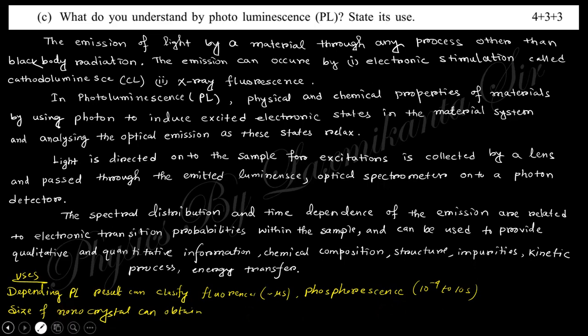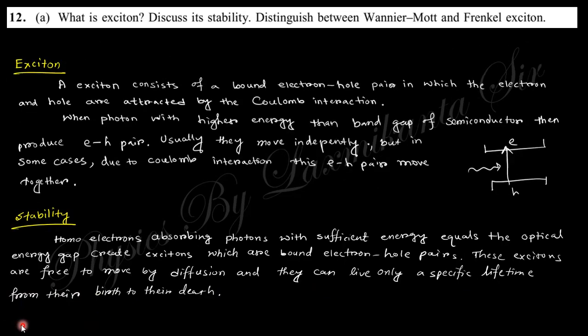Exciton: when the energy is incident on the semiconductor, they generate electron-hole pairs. Generally, these two are free to each other, but in some cases this electron-hole pair as a pair move together.